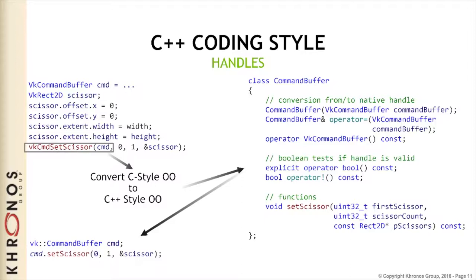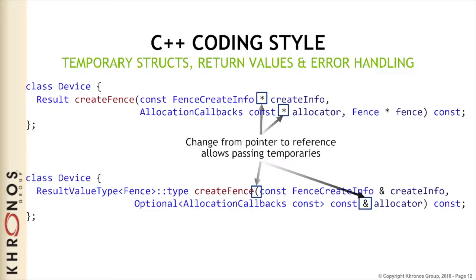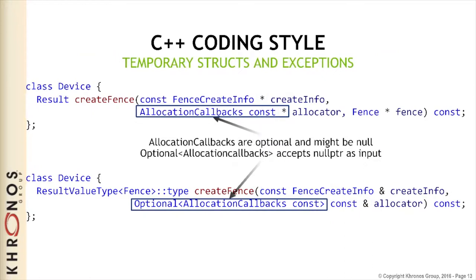In Vulkan you have to pass everything as a pointer. If you pass a struct as a pointer, you can't create a temporary during the function call and get a pointer to it. Each of the new functions converts all pointers to references, because for references you can have temporaries. And since sometimes you might want to pass a null pointer, we added an optional class which allows you to pass a null pointer for the reference. This makes it clear which arguments are optional - if optional is not available, you have to pass in a valid reference.